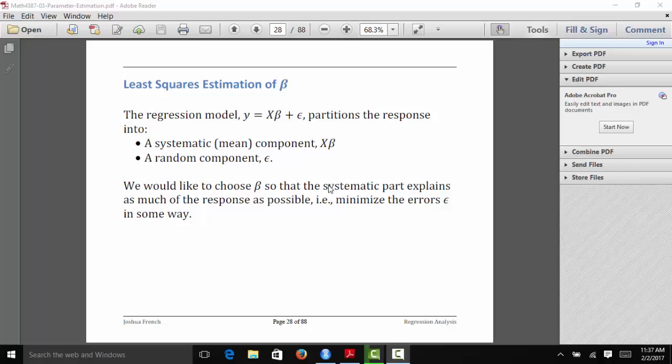Let's talk about least squares estimation of our regression parameter vector beta when representing a multiple linear regression model using matrices. We have our regression model y equals x beta plus epsilon, and this partitions the response into two parts: a systematic or mean component x beta, which is the average relationship between the response and the regressor variables, and a random component epsilon.